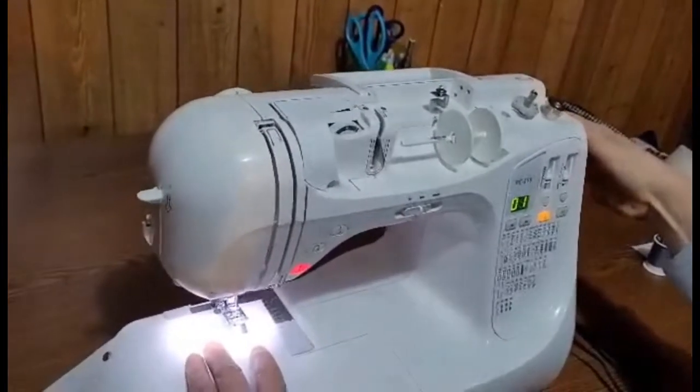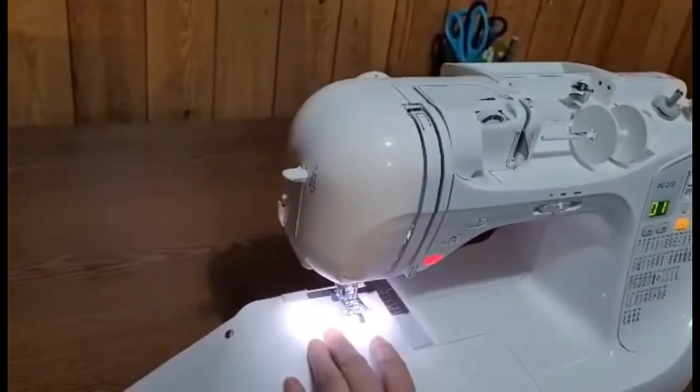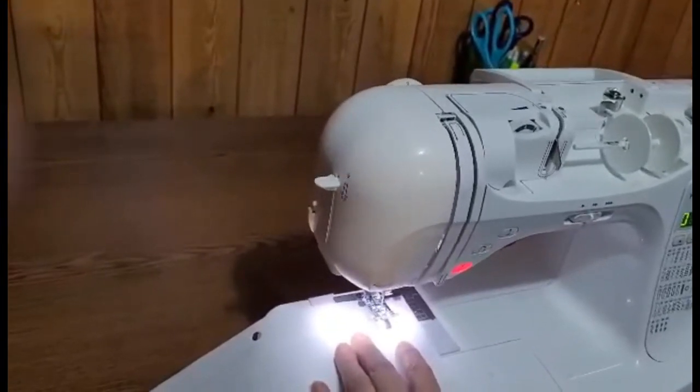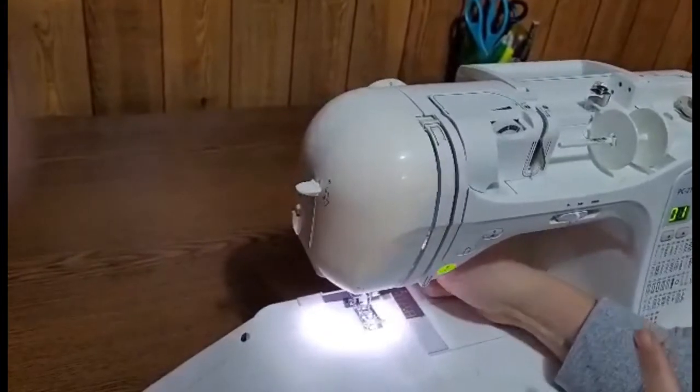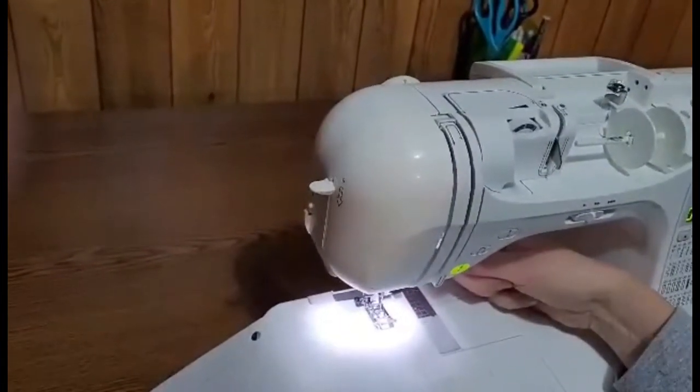I'm going to draw the hand wheel towards me until the needle drops down on the blue line. Then I'm going to gently drop my presser foot. Make sure you hold it up, hold it down. Remember there's about five pounds of pressure here, and if it slams and hits the needle guard it's going to ruin our sewing machine.